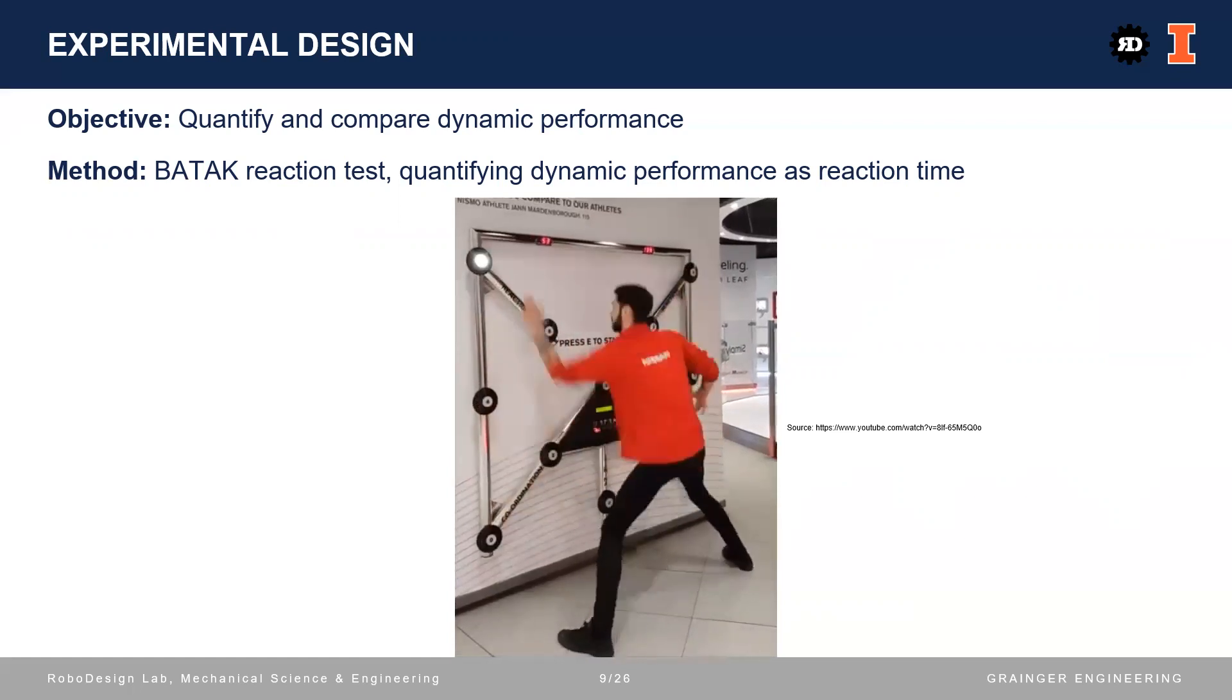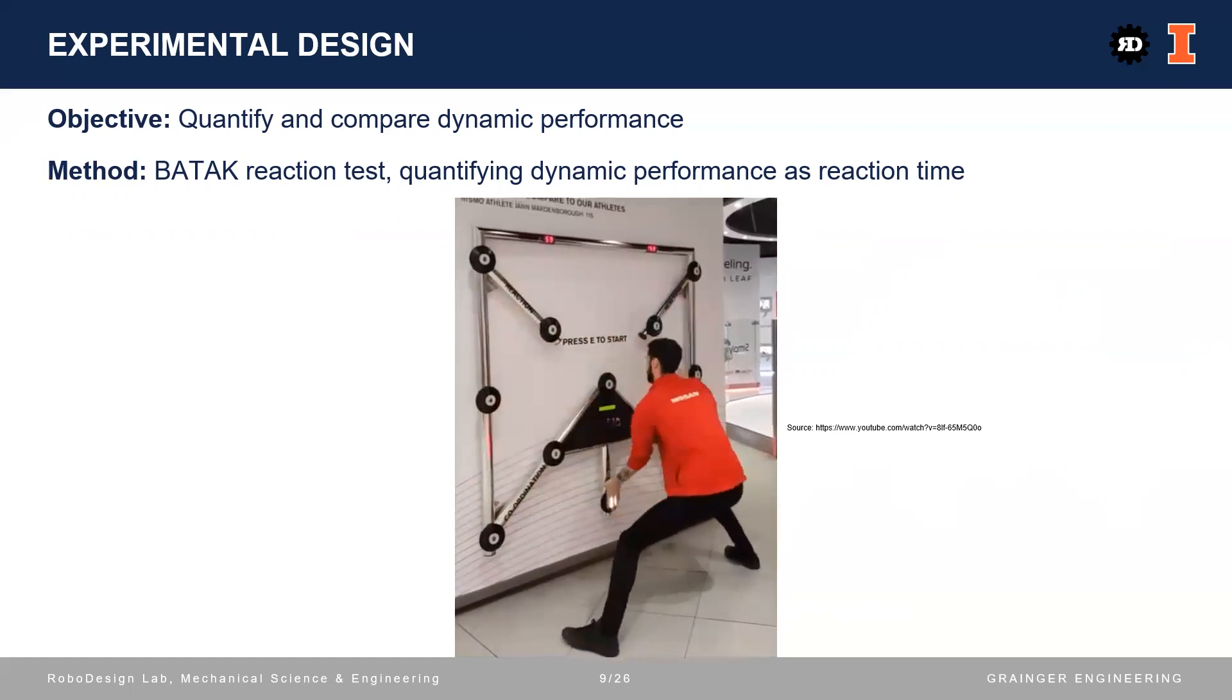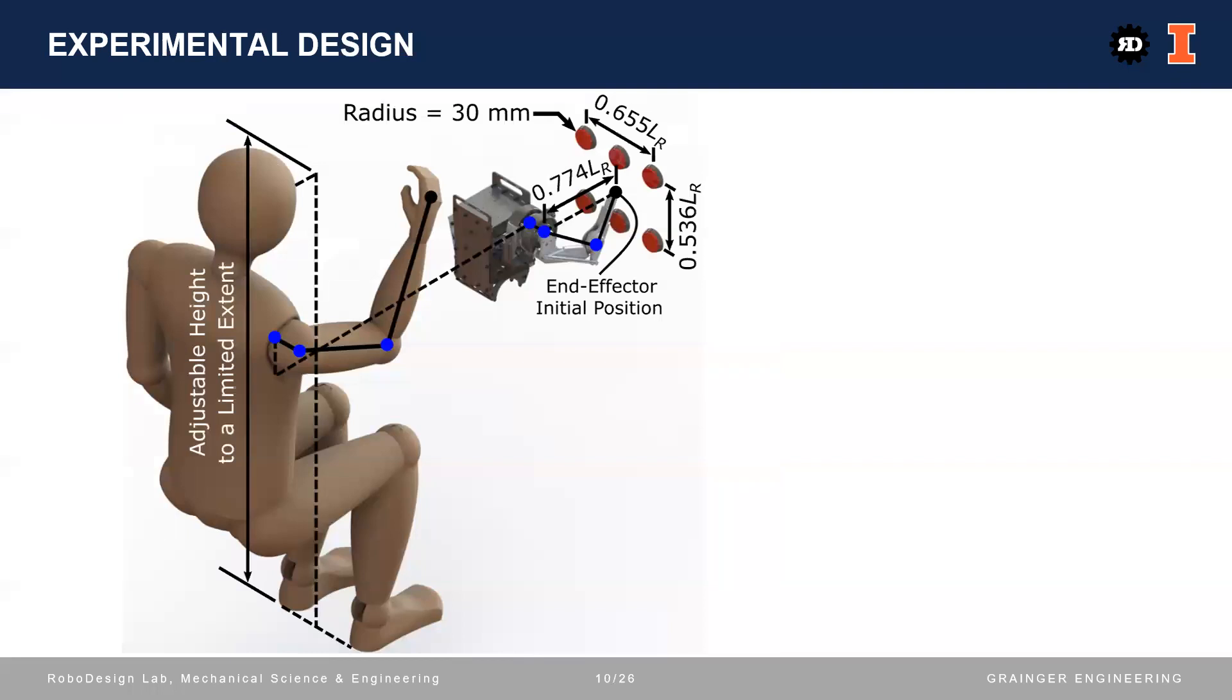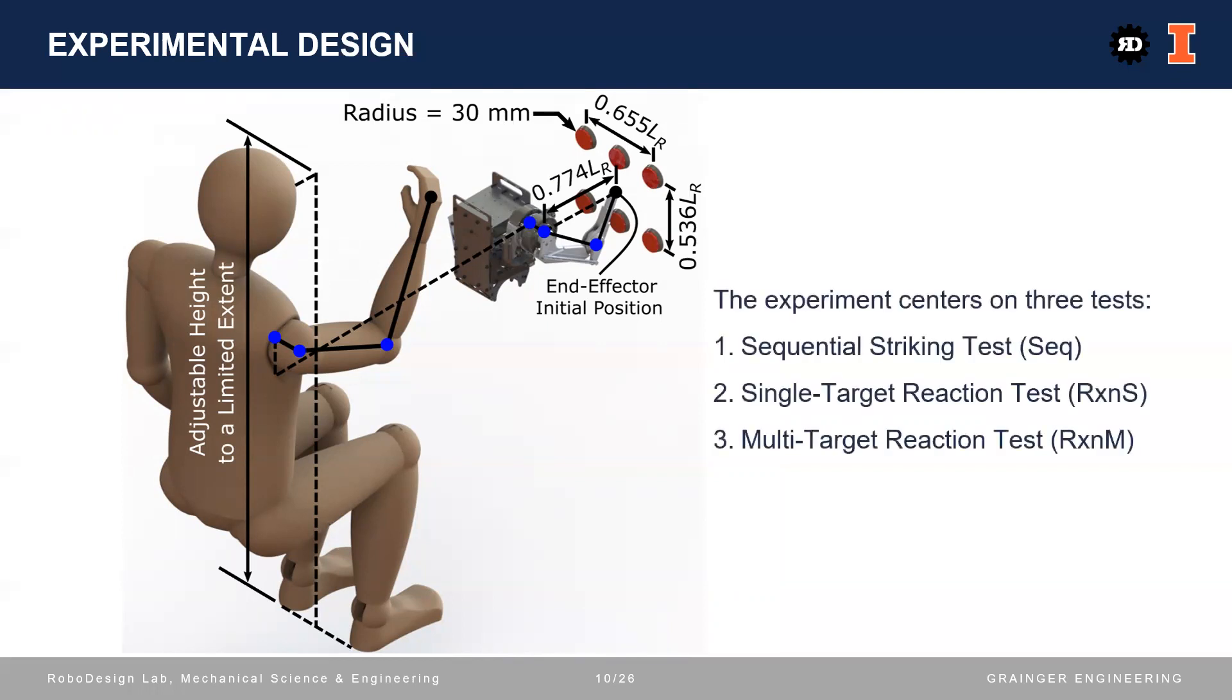Here is a video demonstrating the Batak test. Inspired by the Batak test, we built this experimental setup. The human pilot sits behind the robot, which is smaller than a human. In front of the robot is an array of six targets, arranged in normalized distances by the robot's arm length. The experiment centers on three tests.